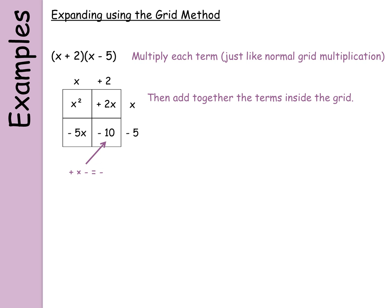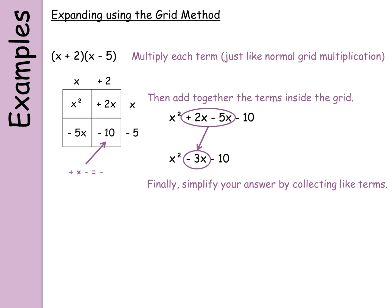As before, add together the terms inside the grid. So I've got x squared plus 2x minus 5x minus 10. Then simplify by collecting like terms — you have to be really careful with your positives and negatives here. I've got plus 2x and I'm taking off 5x, so imagine starting at positive 2 on a number line and counting down 5 jumps — that gets you to minus 3. So my final answer is x squared minus 3x minus 10.